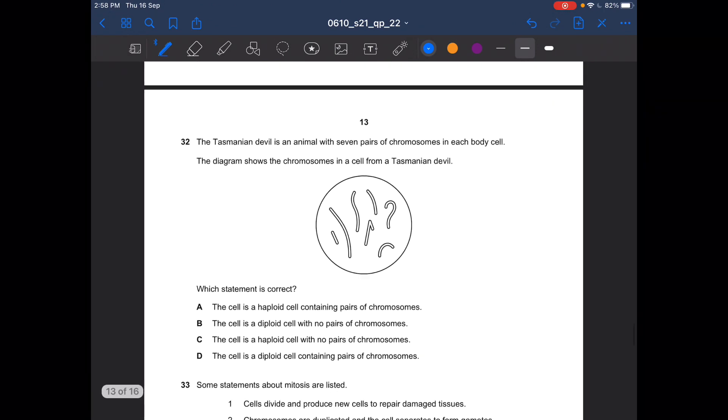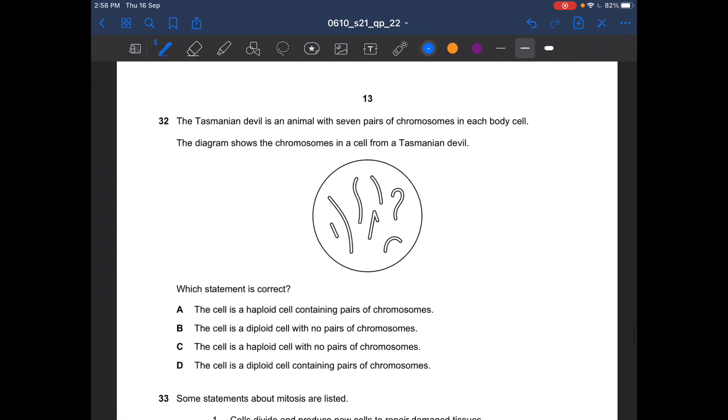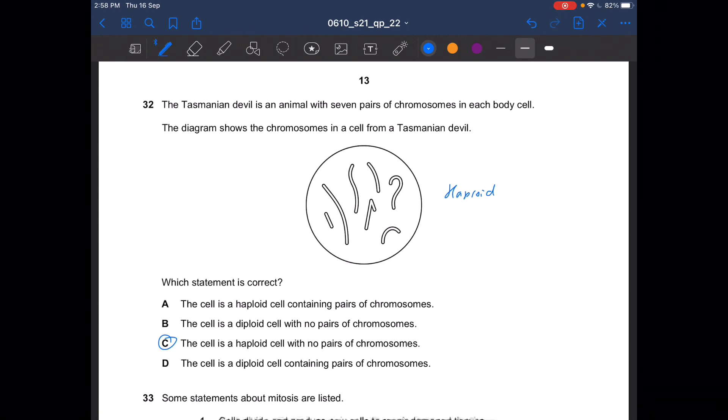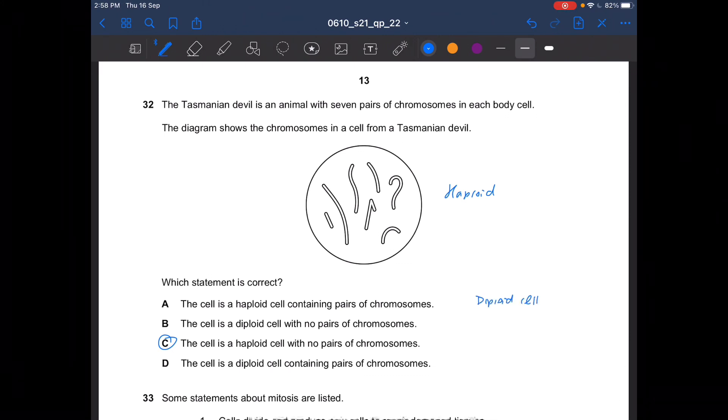Next question. The Tasmanian devil is an animal with 7 pairs of chromosomes in each body cell. The diagram shows the chromosomes in a cell from a Tasmanian devil. Which statement is correct? Is this a haploid cell as there are no pairs of chromosomes? So the answer is C. The cell is a haploid cell with no pairs of chromosomes. If it is a diploid cell, then it should contain pairs of chromosomes.